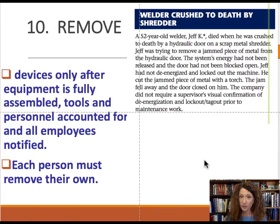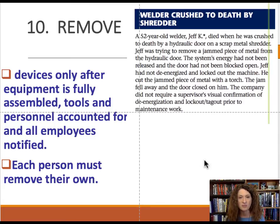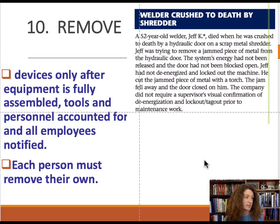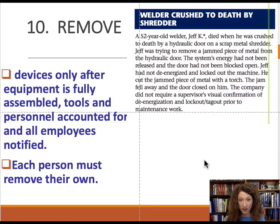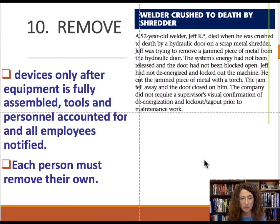A 52-year-old welder named Jeff died when he was crushed by a hydraulic door on a scrap metal shredder while trying to remove a jammed piece of metal. The system's energy had not been released — it was turned off, but the door still had stored energy in its pistons. Jeff had not de-energized and locked out the machine. He cut the jammed metal with a torch, the jammed piece fell away, and the door closed on him. The company did not require a supervisor's visual confirmation of de-energized and locked-out equipment prior to maintenance work.